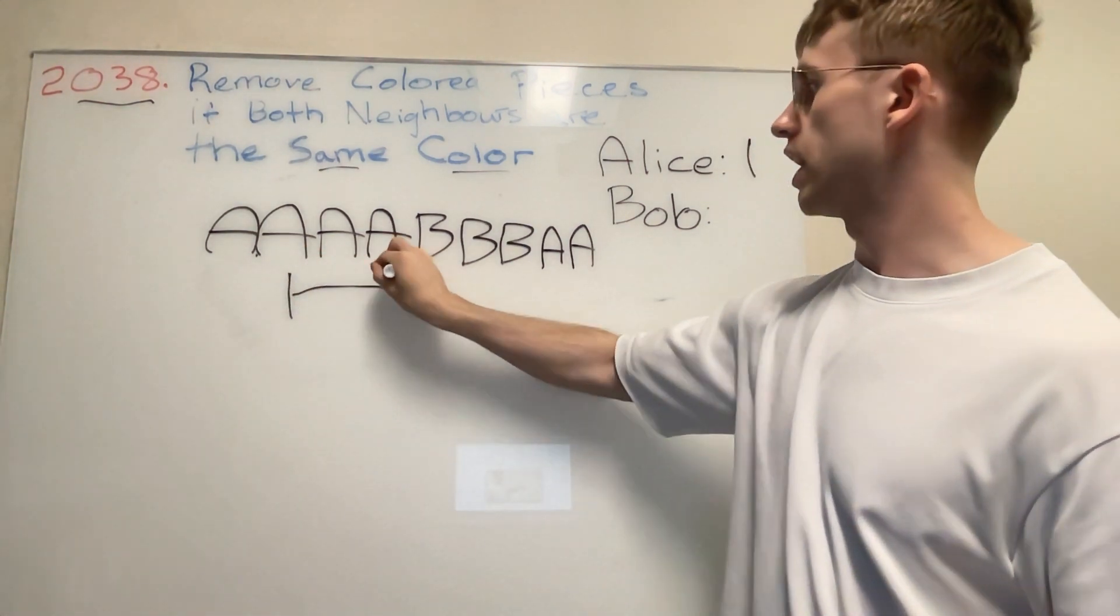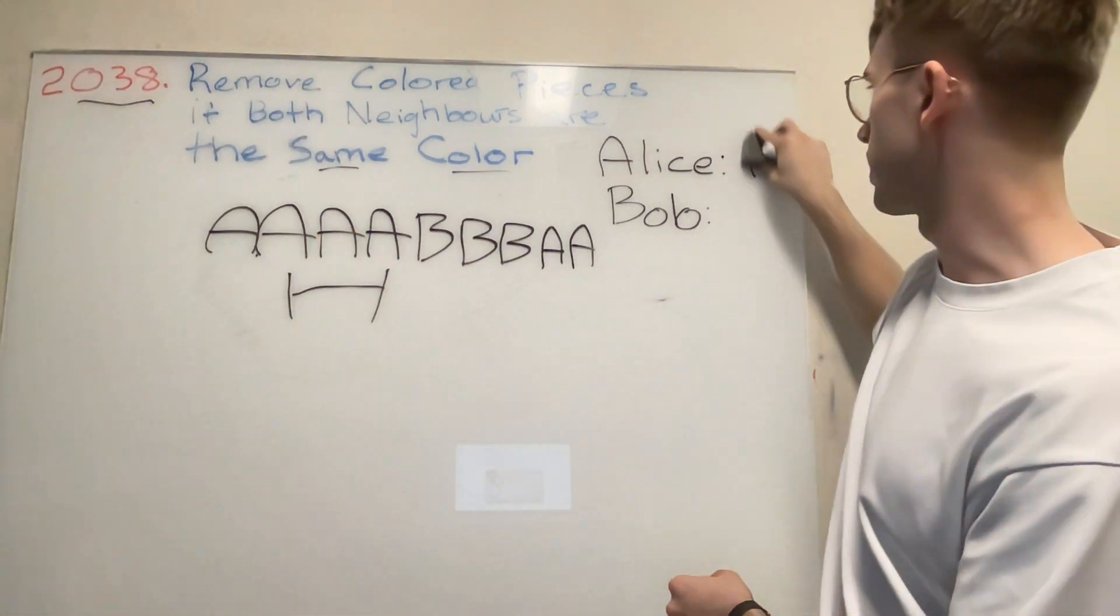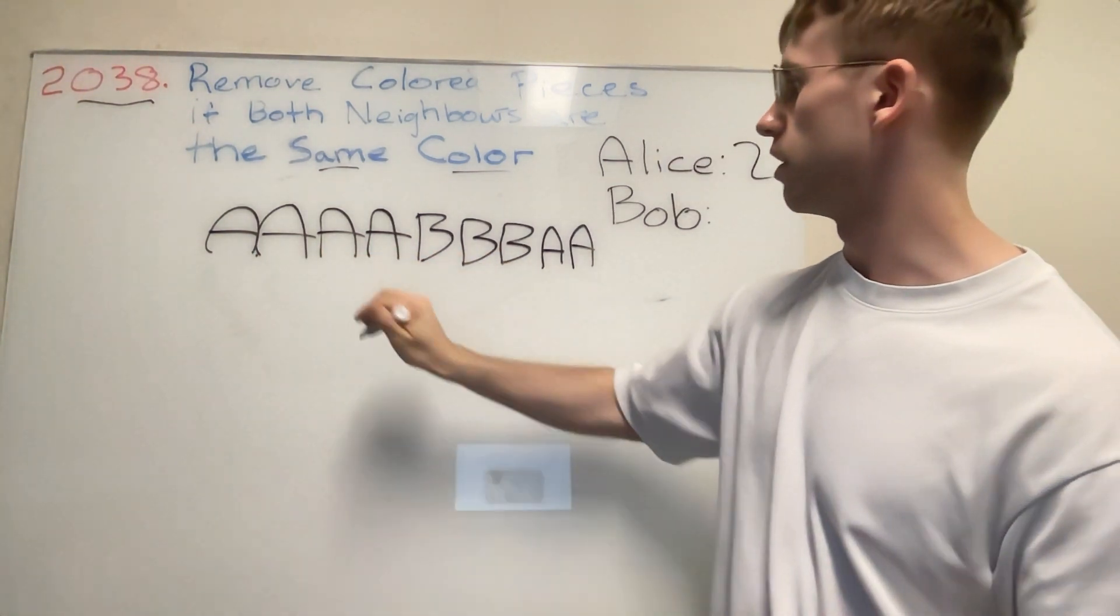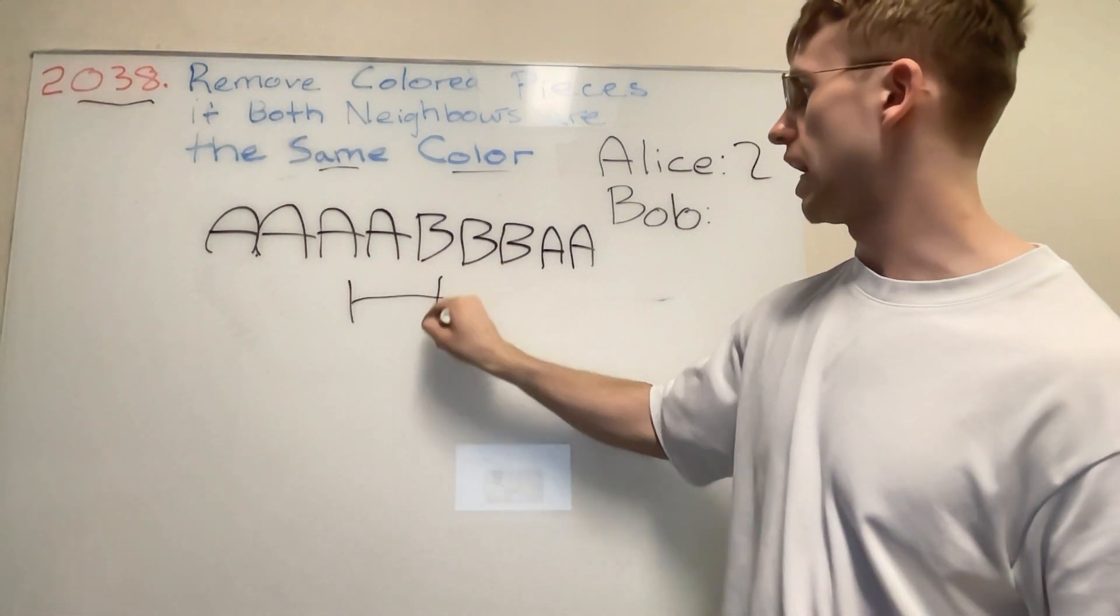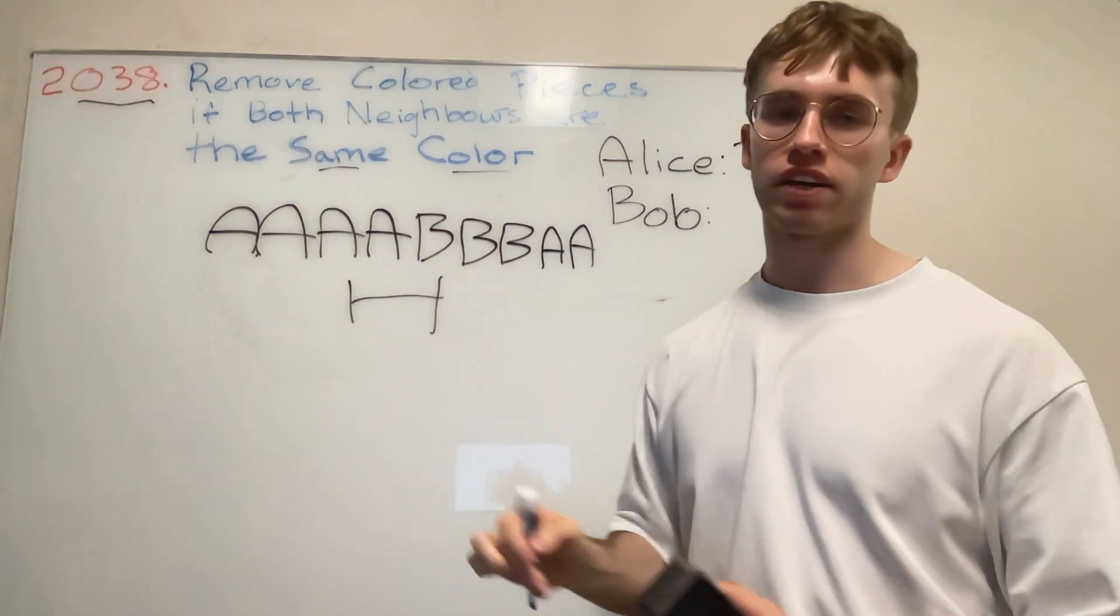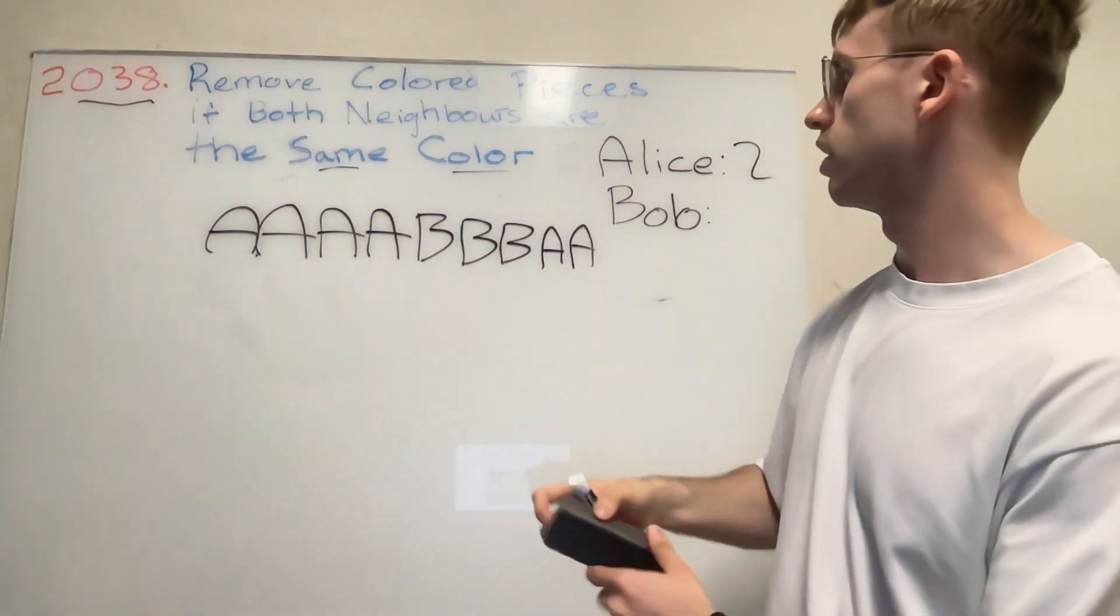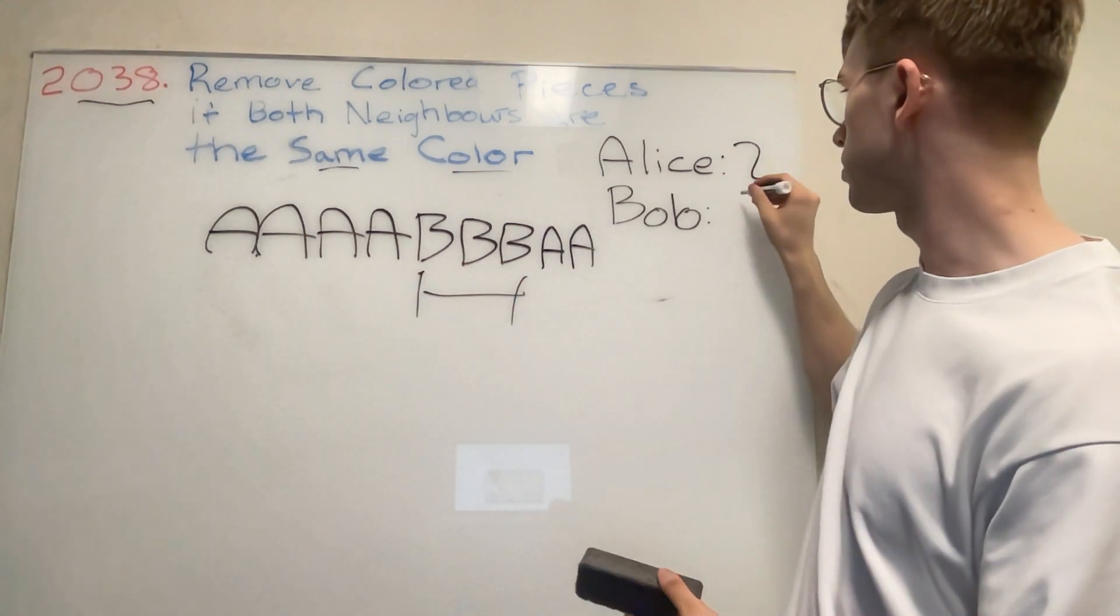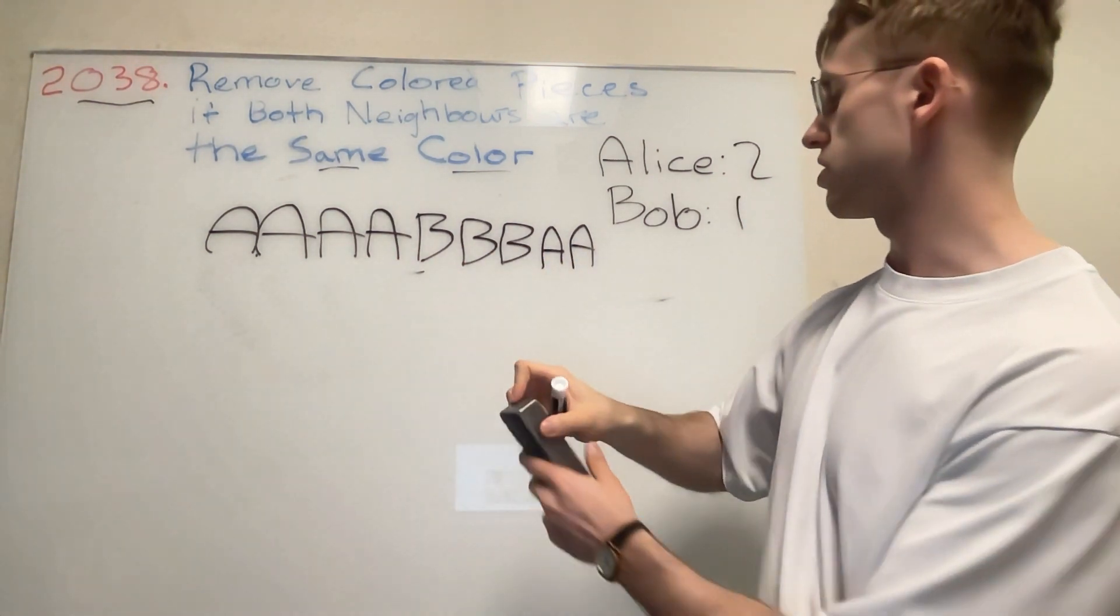And then once again the sliding window moves along and we see that Alice could actually get another point, so two. Then the sliding window moves along and now that's AAB, so Alice can't get a point there. But then when we see BBB, Bob could get a point.